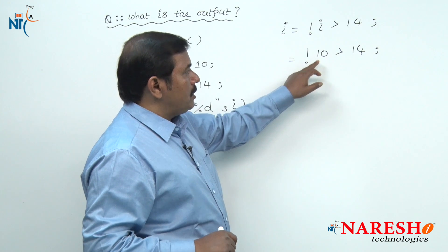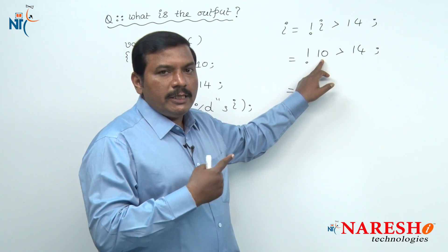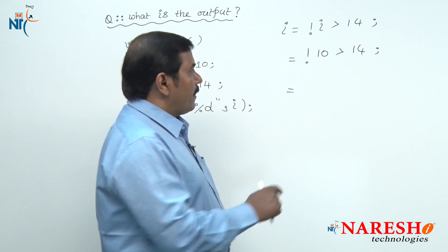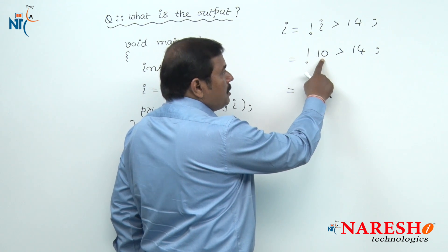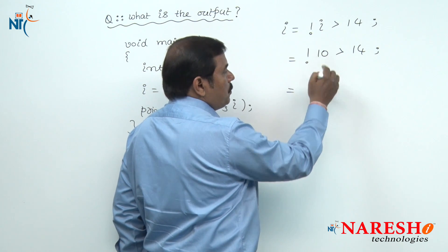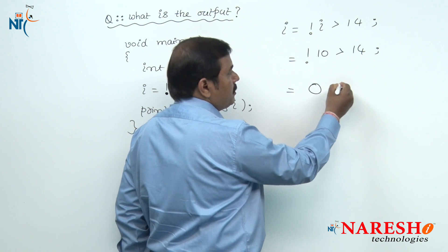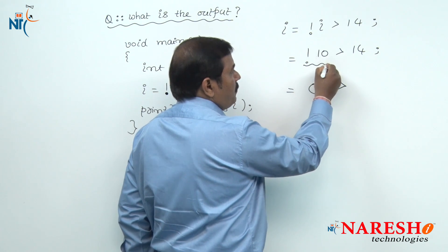This logical not operates on the operand 10. 10 means non-zero. Non-zero is true, not true is false. 0 is the value of not 10.